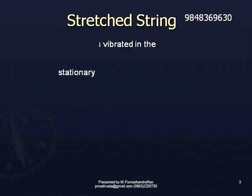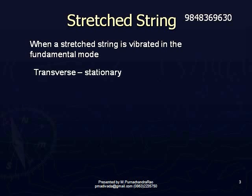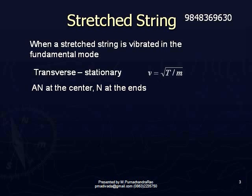The relation for frequency in the fundamental mode in the case of a stretched string: when a stretched string is vibrated, transverse stationary waves are formed on it. The speed of the wave in the string is given by V = √(T/M), where T is the tension and M is the linear density of the material of the wire.